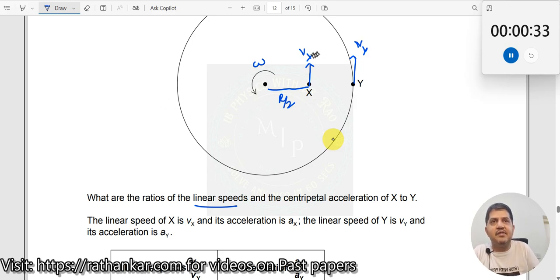What is Vx? Vx equals omega times r/2, and Vy equals omega times r.